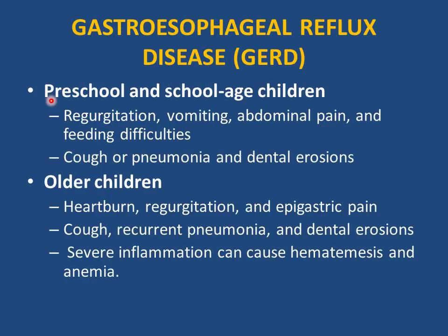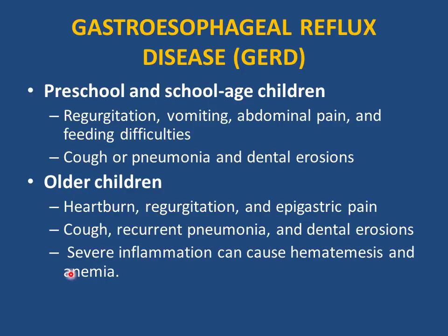GERD may present in preschool and school-aged children with regurgitation, vomiting, abdominal pain, and feeding difficulties, and also with cough, pneumonia, and dental erosions. In older children who can localize pain, presentation includes heartburn, regurgitation, and epigastric pain, as well as cough, recurrent pneumonia, and dental erosions. In severe cases, hematemesis and anemia may occur.